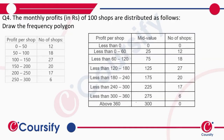The monthly profits in rupees of hundred shops are distributed as follows. Draw the frequency polygon, that is an ogive curve. We take less than, find the mid values, and then we have the number of shops, and we plot them.